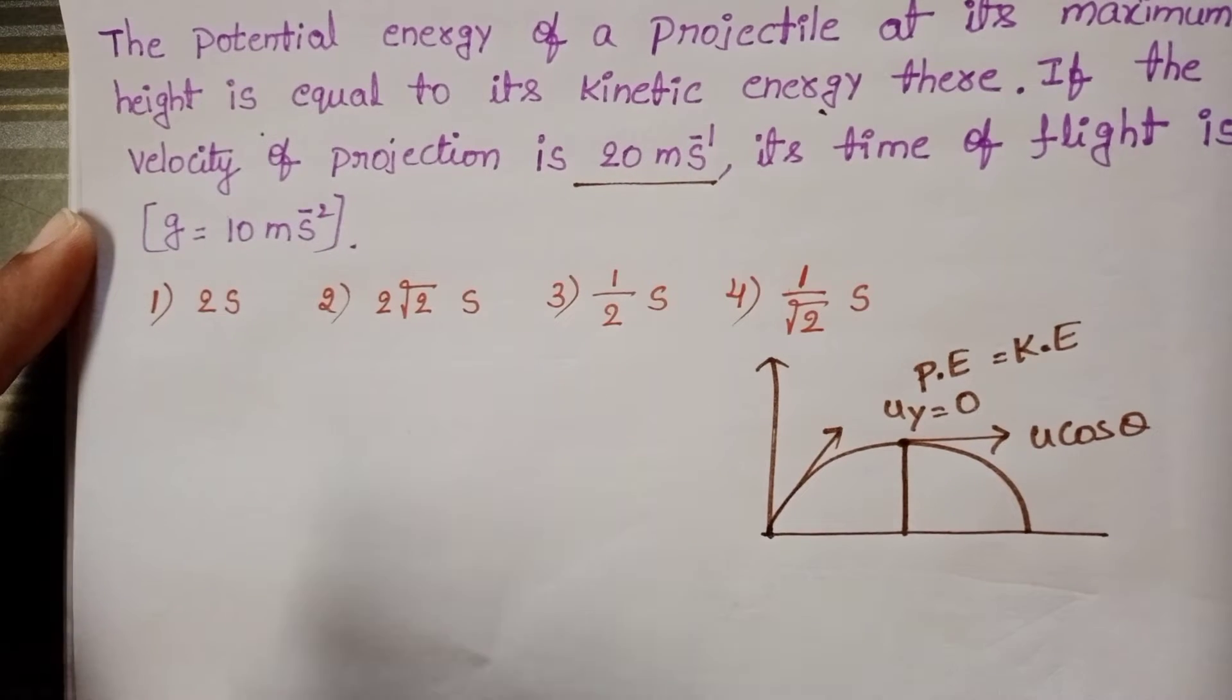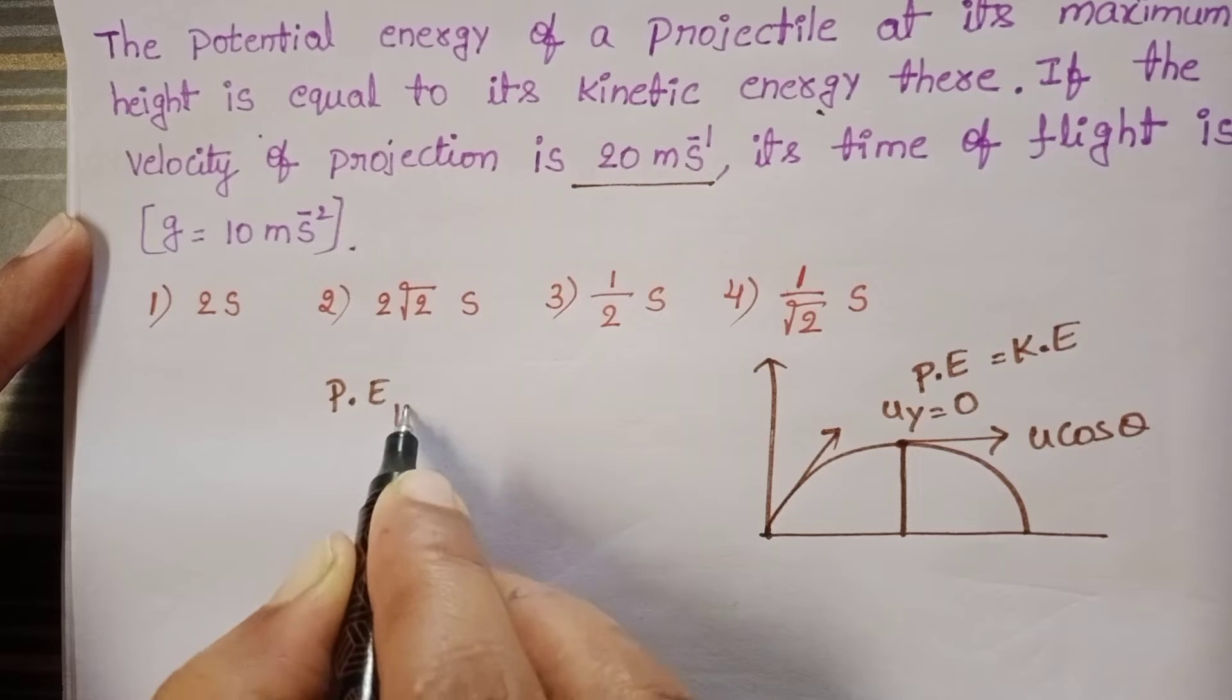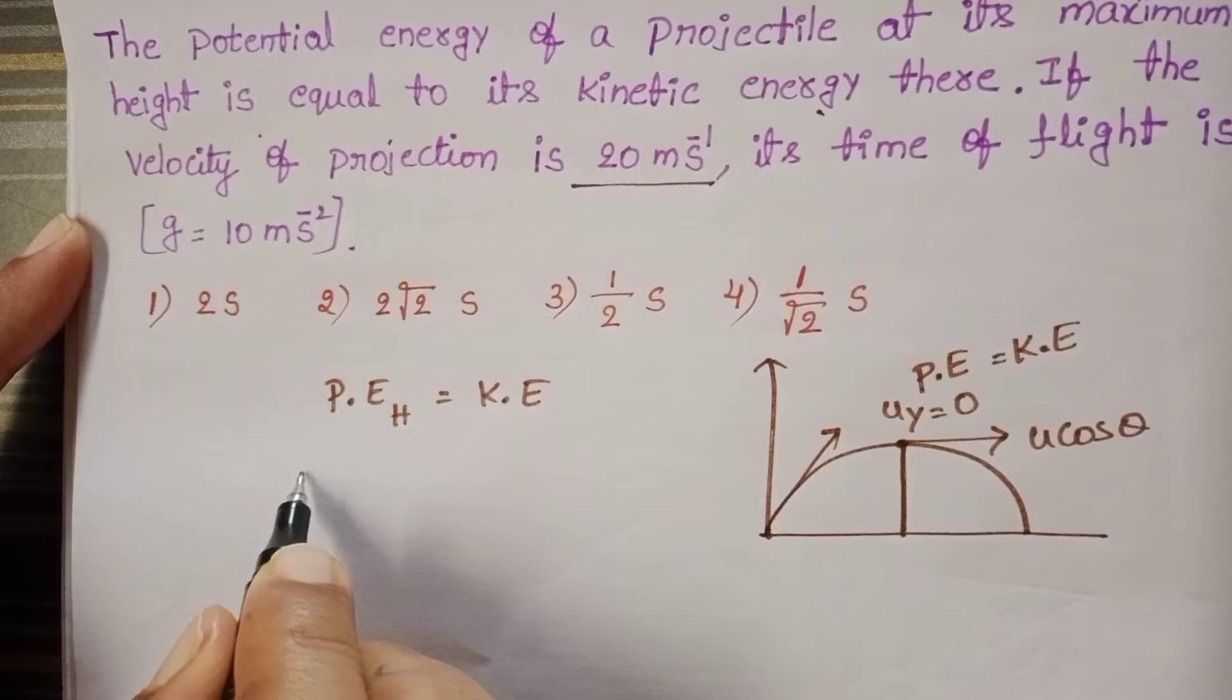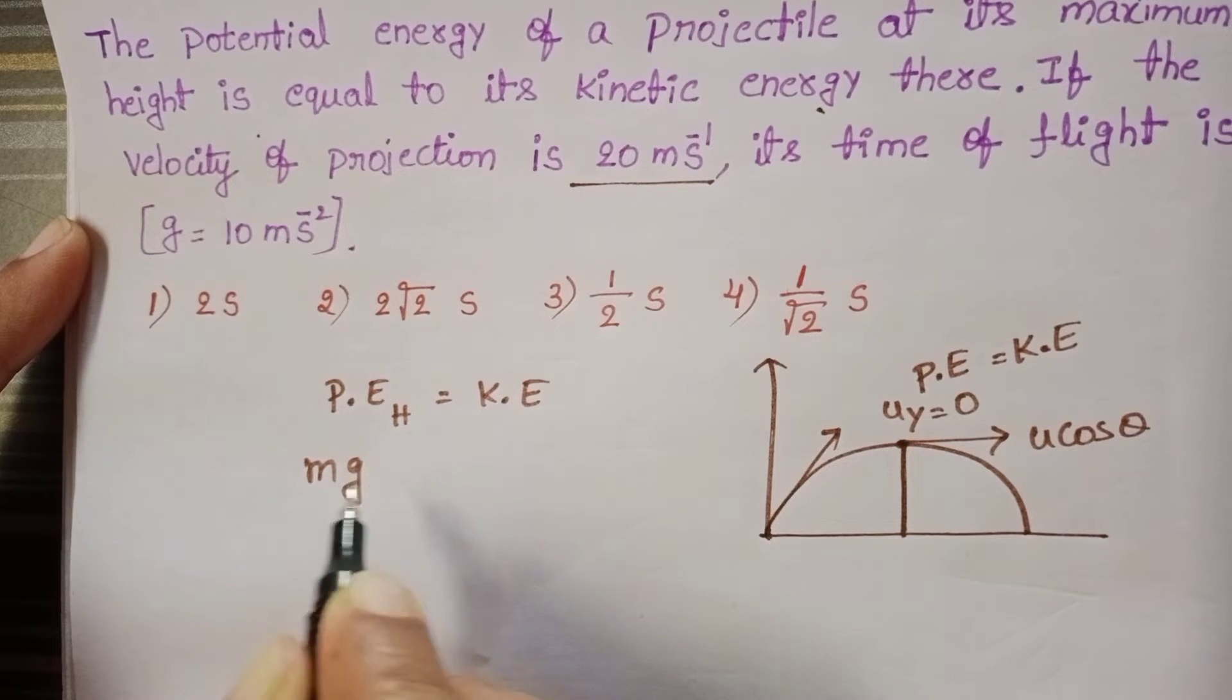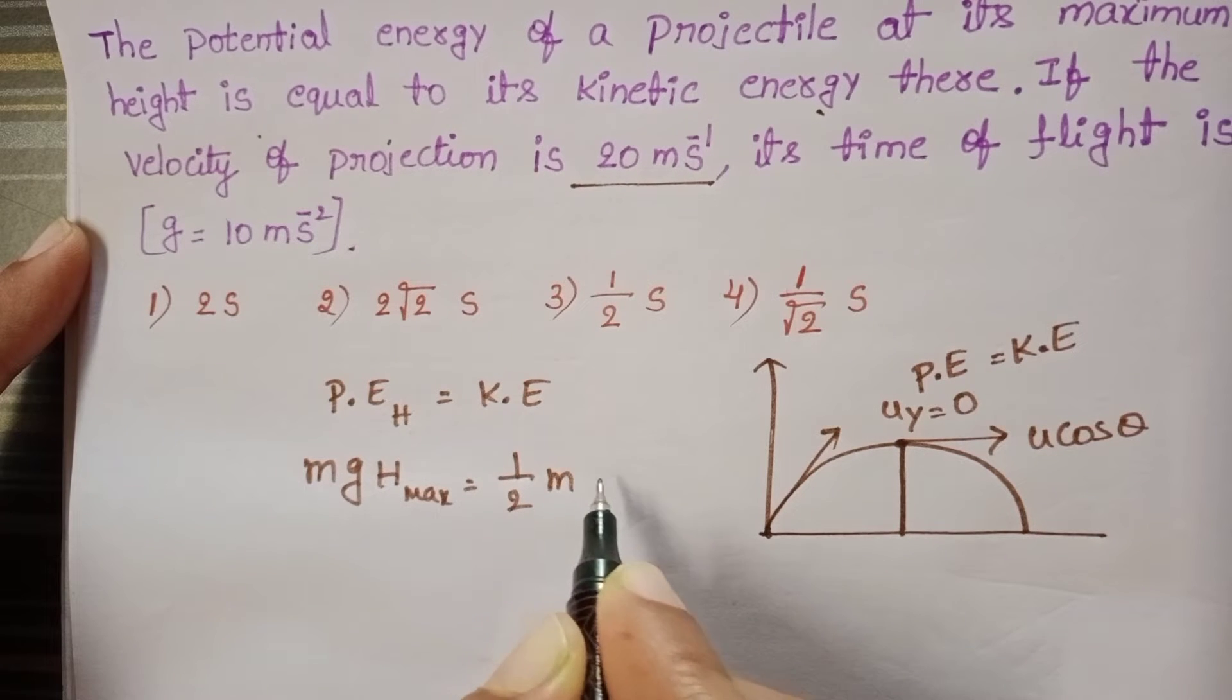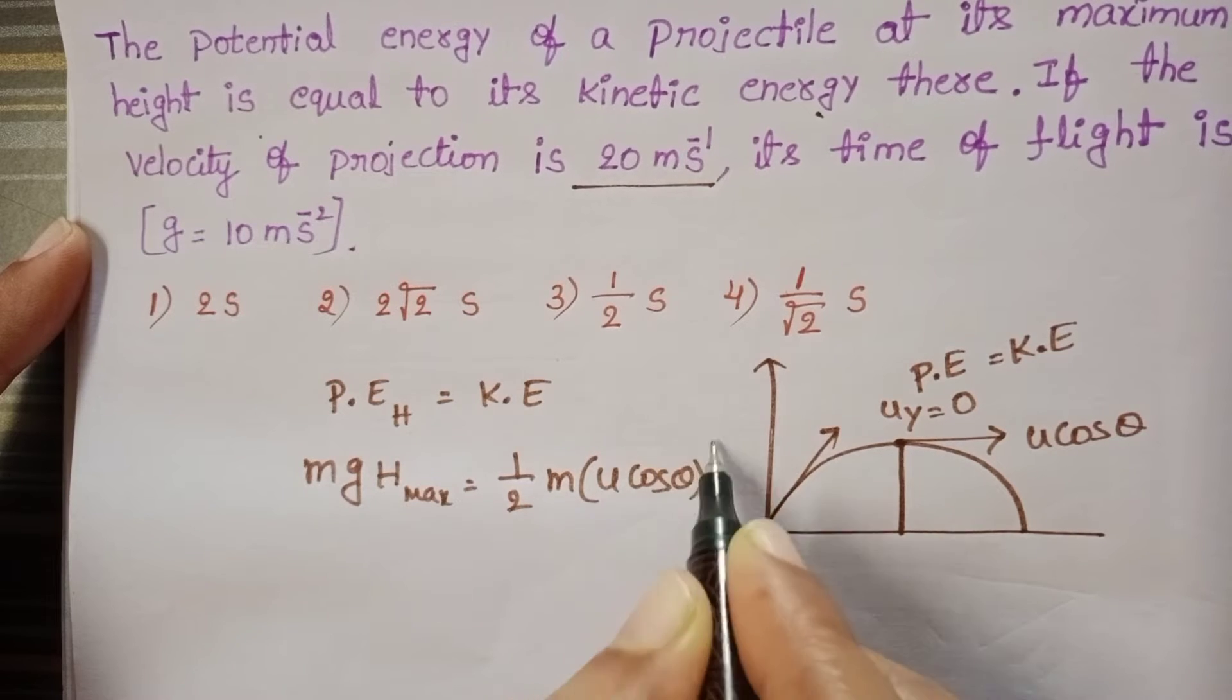By using the given condition, potential energy at maximum height equals kinetic energy. The formula mgh equals ½m(u cos θ)², where velocity is u cos θ.